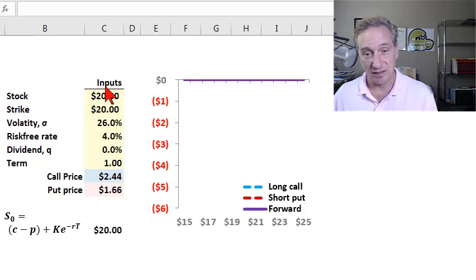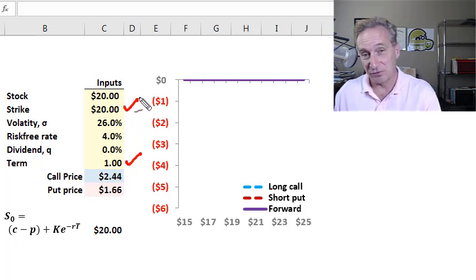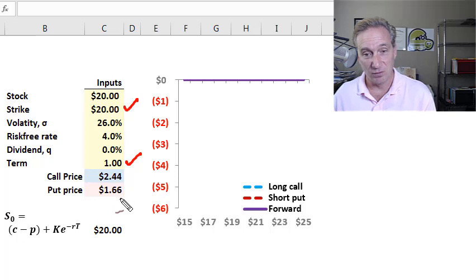I did use all six of the classic inputs into that model. There is a condition for put call parity to apply. Easy to forget this: the condition is that the call and the put are European and that they are on the same asset with identical strike price and maturities. In my example, the strike price is $20 and the maturity is one year.